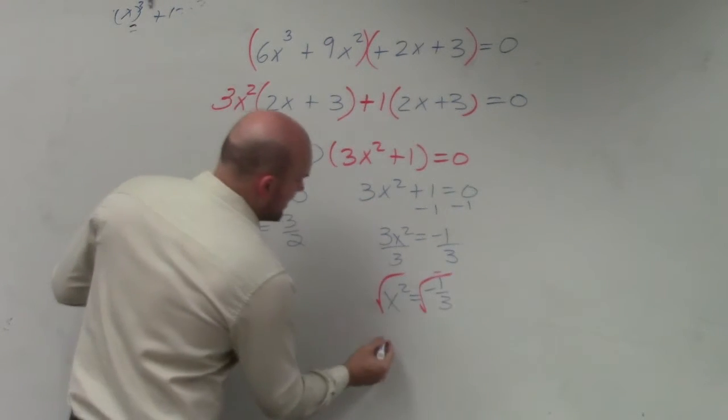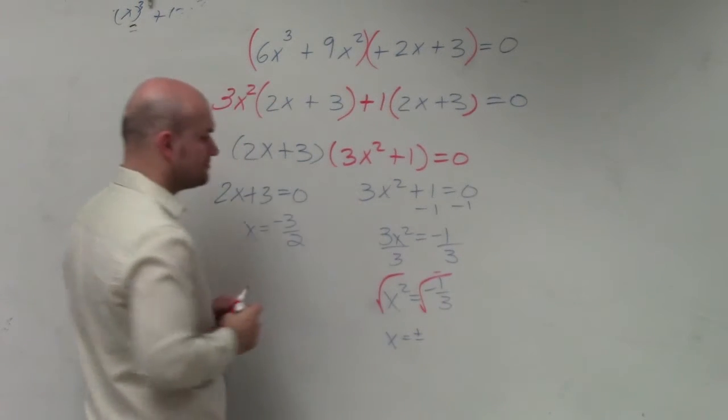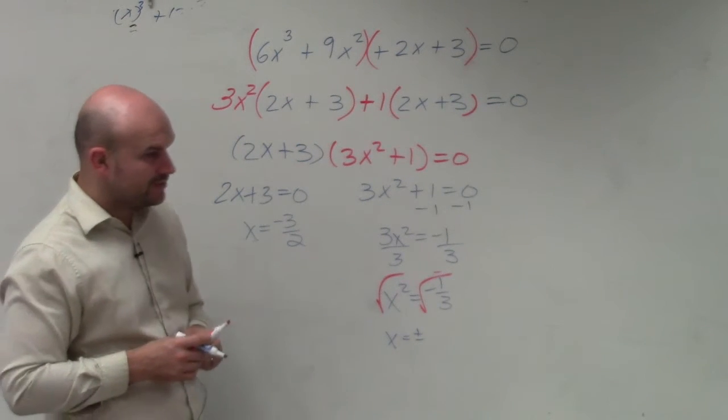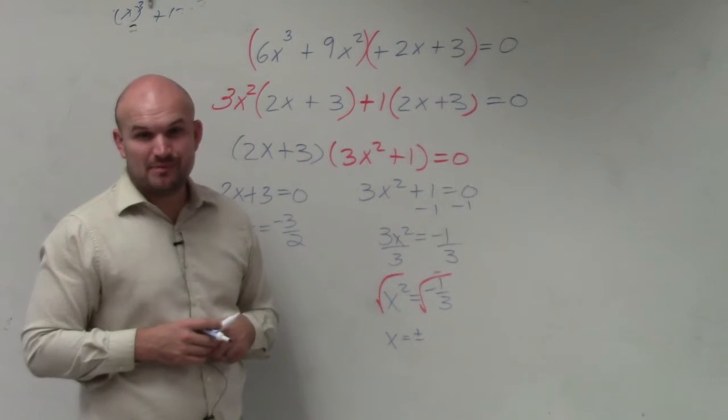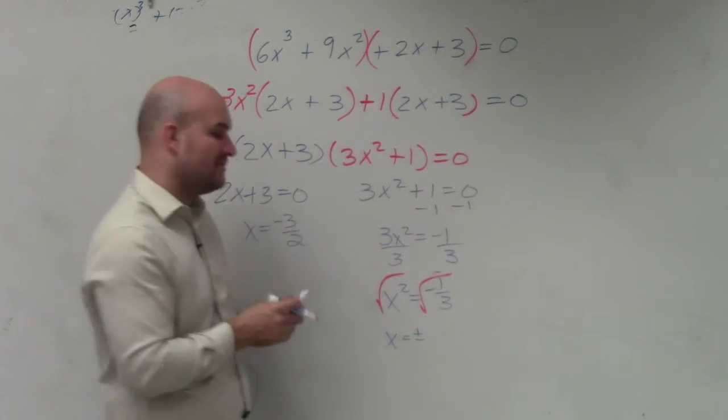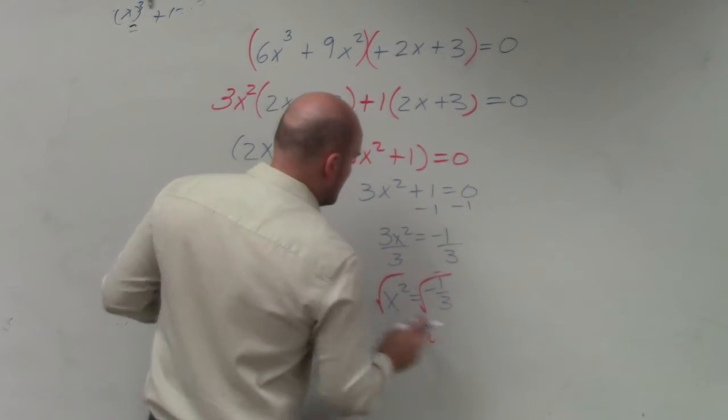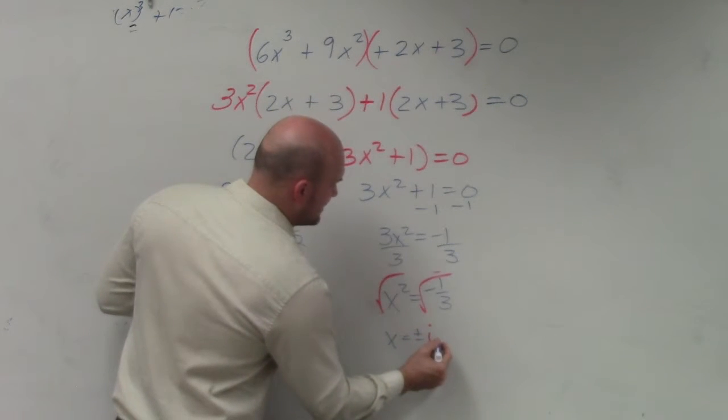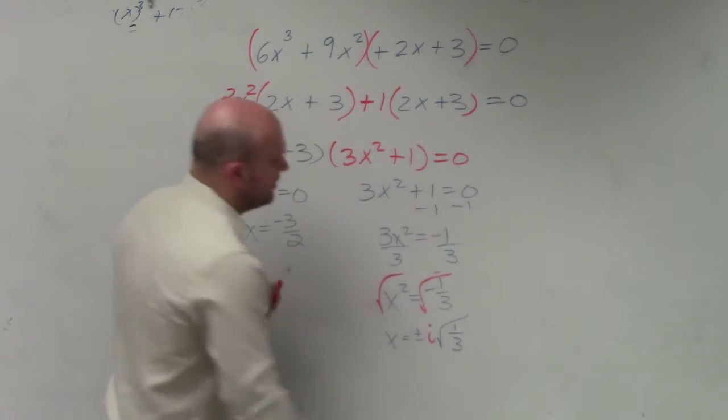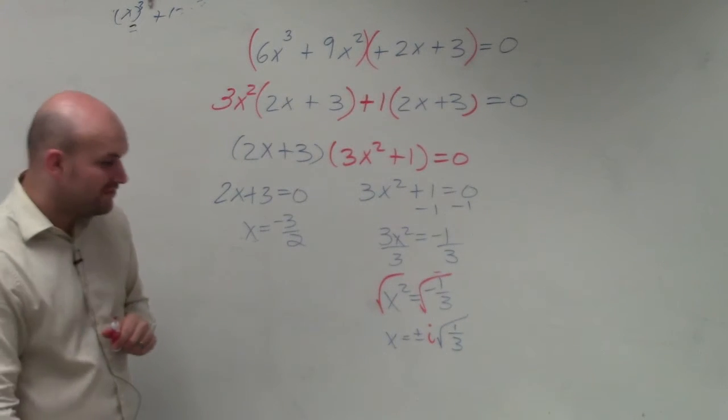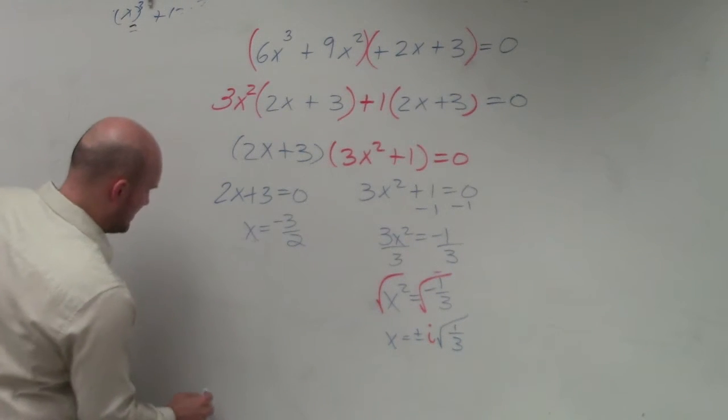So therefore, I get x equals plus or minus. Now can we take the square root of a negative number? No. So I can take that out as i. And therefore, I can rewrite this as the square root of 1 over 3. However, we want to see if we can simplify that, which we can.